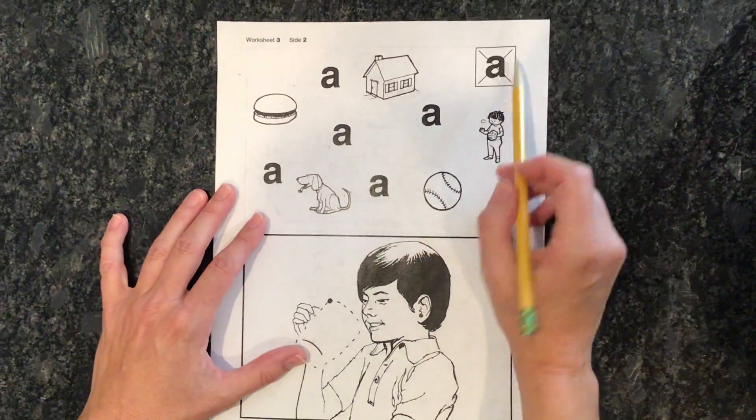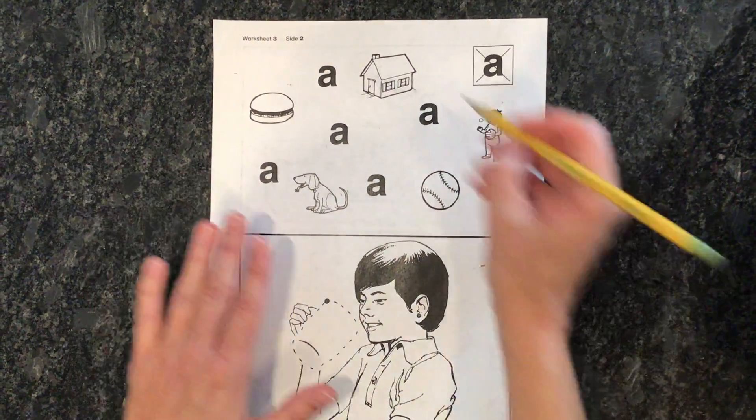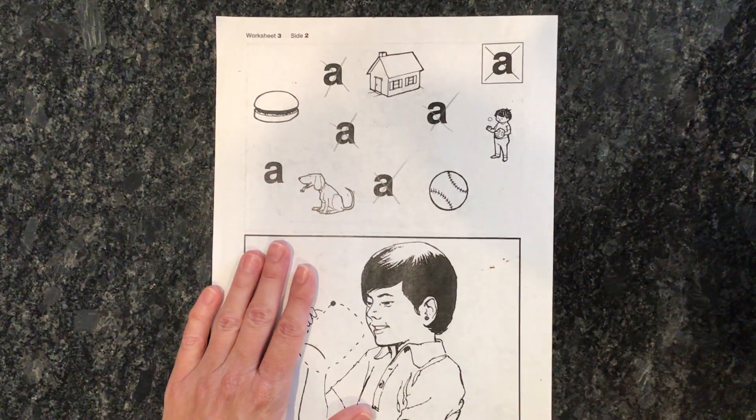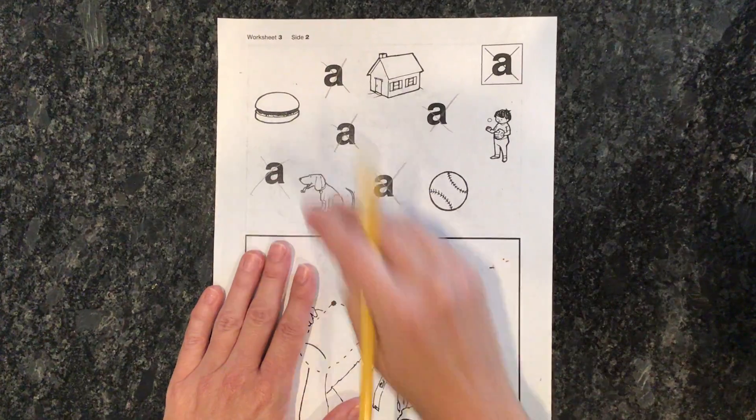Flip your paper over. Here's my direction. What am I doing today? Crossing out at again. That's right. So I'm going to find all of them. Did I get them all? No, I missed one. Good catch.